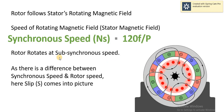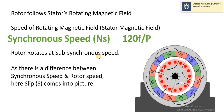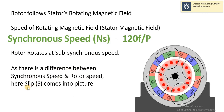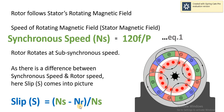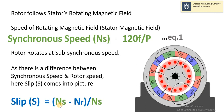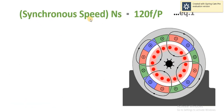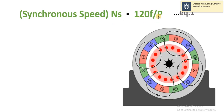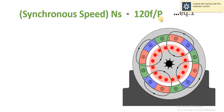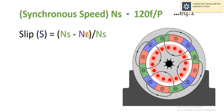The rotor rotates at sub-synchronous speed, which is the speed slightly less than synchronous speed. As there is a difference between synchronous speed and rotor speed, slip comes into picture. Slip is the difference between synchronous speed and rotor speed expressed as a fraction of synchronous speed: S = (NS − NR) / NS. This is equation number 1: NS = 120F / P, and equation number 2: S = (NS − NR) / NS.